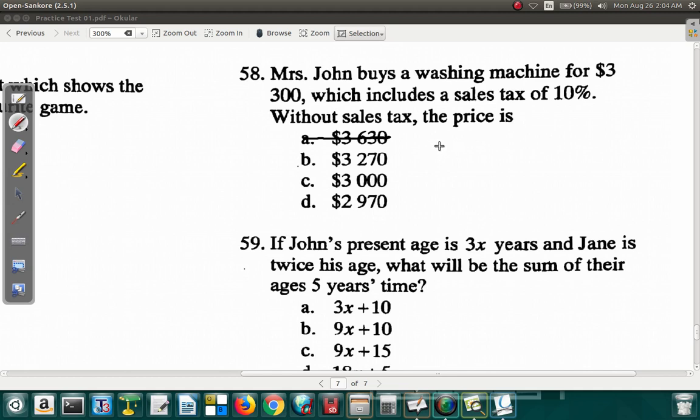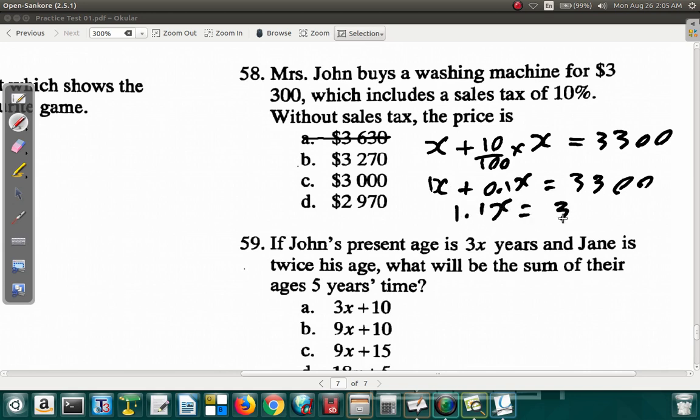You had X, the price before, plus 10% tax. 10% of X. Whatever it is. It came out to $3,300. You don't know what the price without the tax was. This is equivalent to X plus 0.1X equals $3,300. This is 1X. So 1 plus 0.1. 1.1X is equal to $3,300.